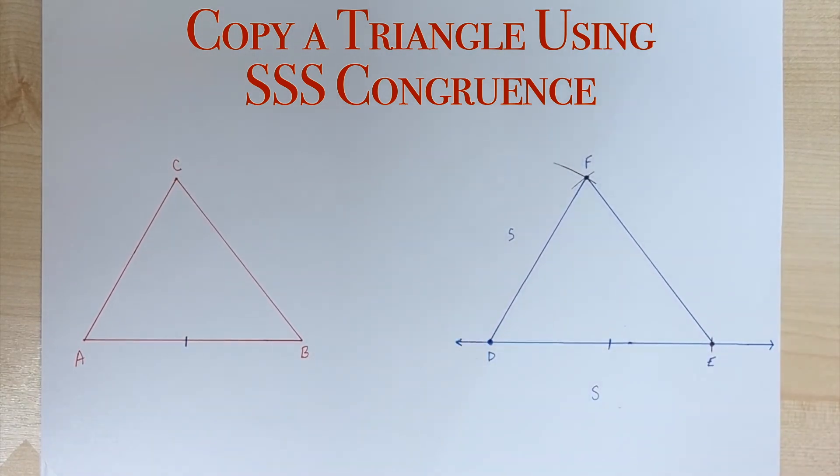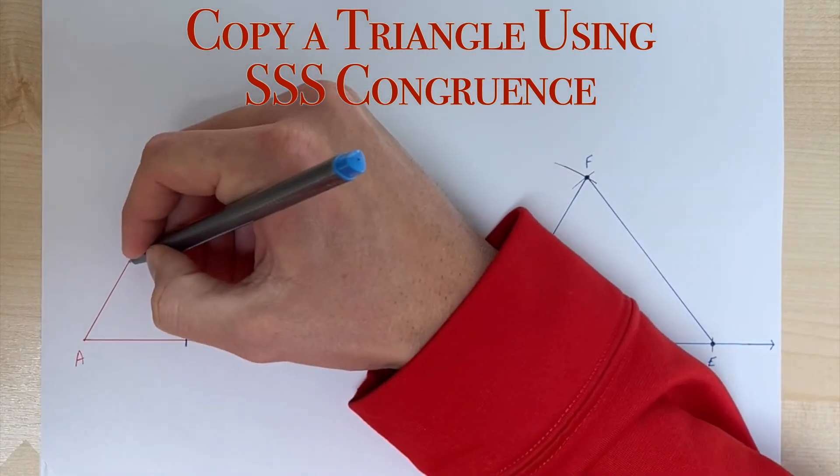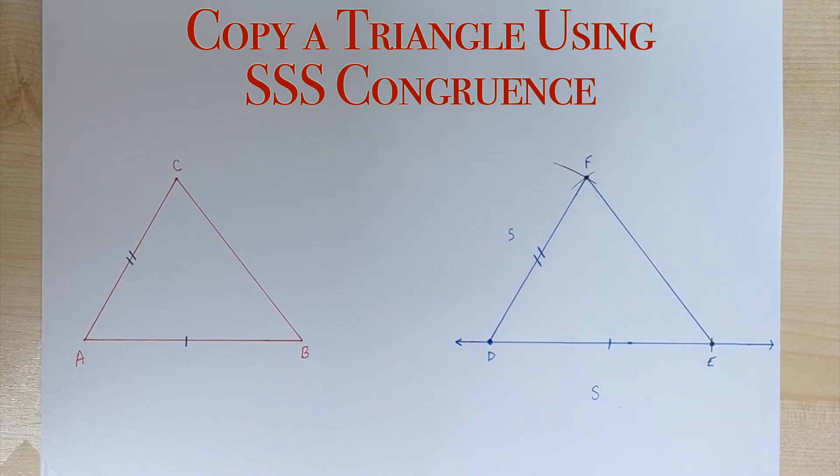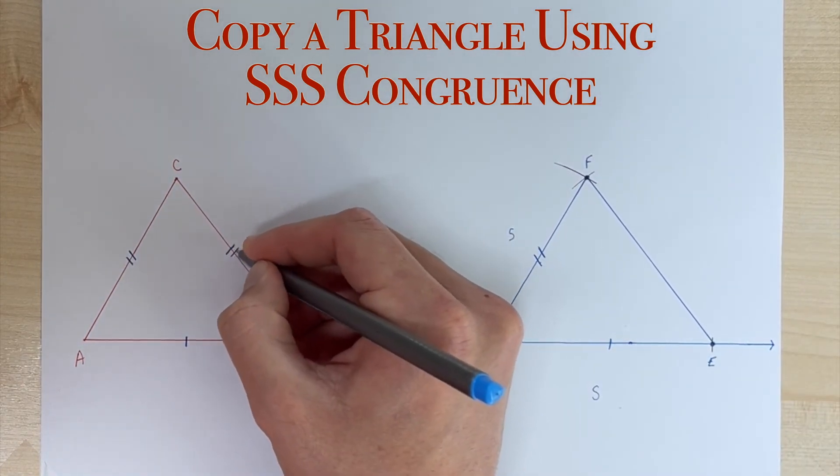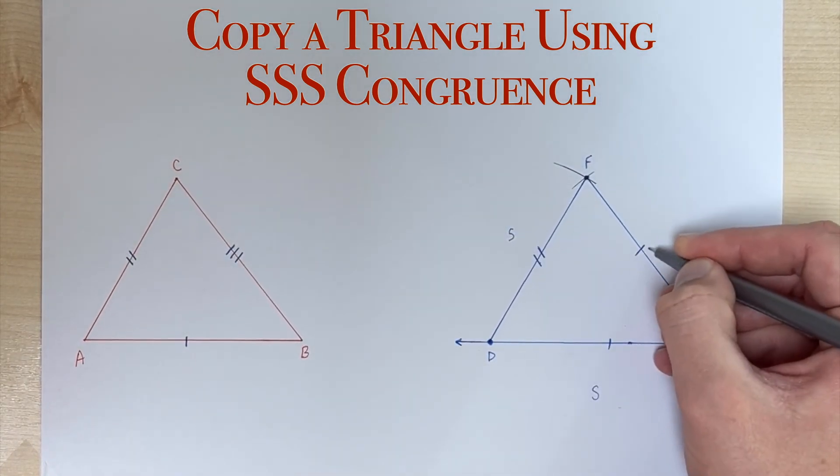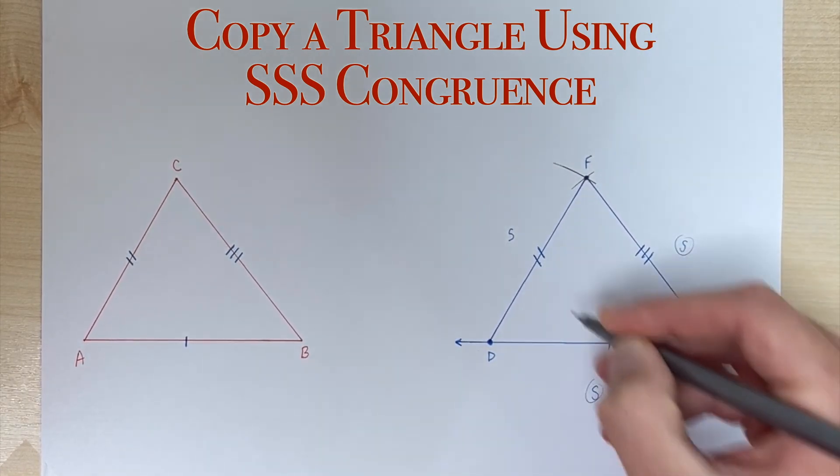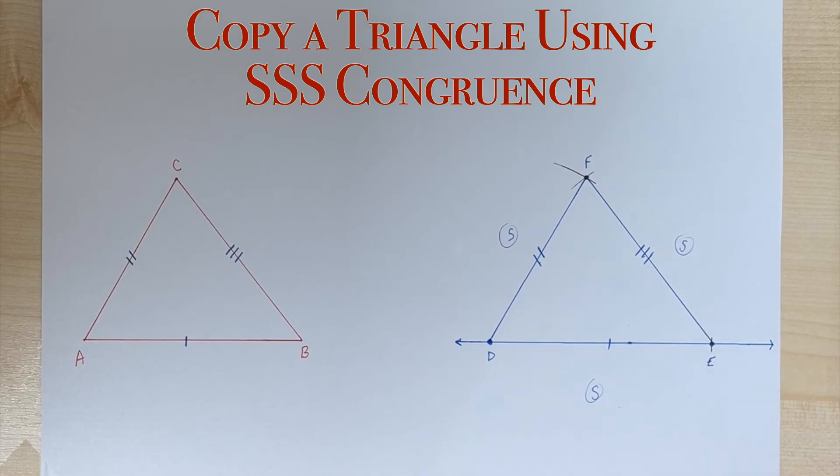Side AC is congruent to side DF and side BC is congruent to side EF. All right, so we've got side-side-side congruence theorem and we have copied a triangle using side-side-side.